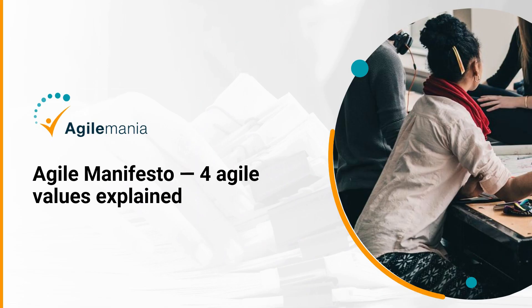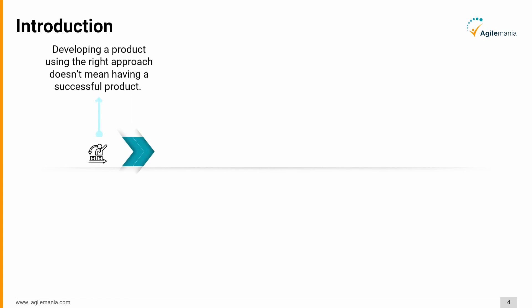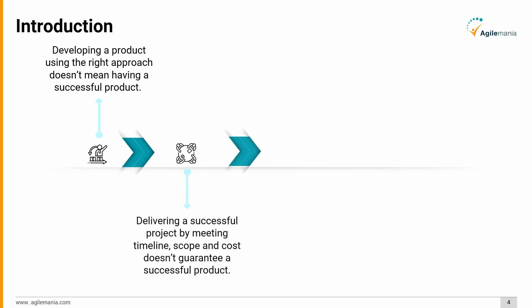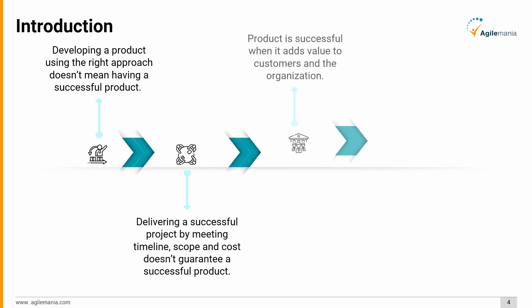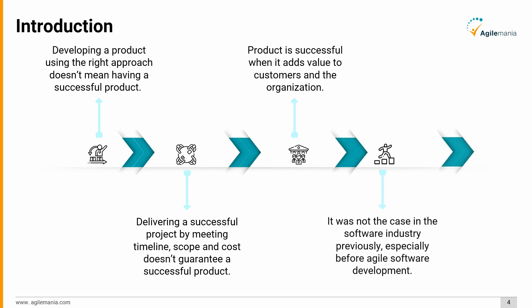Agile manifesto for agile values explained. Developing a product using the right approach doesn't mean having a successful product. Delivering a successful project by meeting timeline, scope, and cost doesn't guarantee a successful product. A product is successful when it adds value to customers and the organization. This was not the case in the software industry previously, especially before agile.